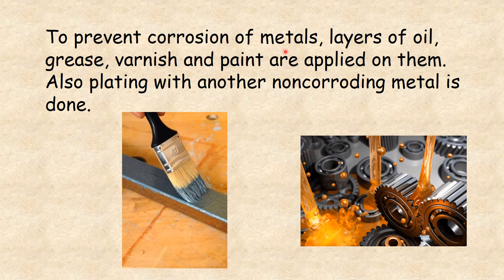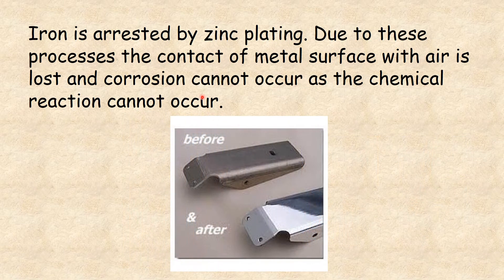To prevent corrosion of metals, layers of oil, grease, varnish, or paint are applied on them. Also, plating with another non-corroding metal is done. For example, iron is protected by zinc plating. Due to these processes, the contact of the metal surface with air is lost and corrosion cannot occur as the chemical reaction cannot take place.